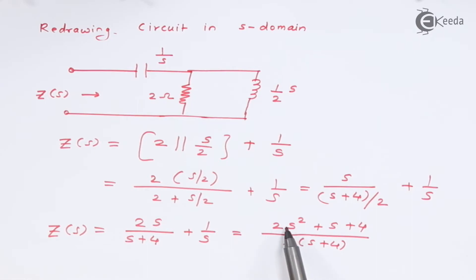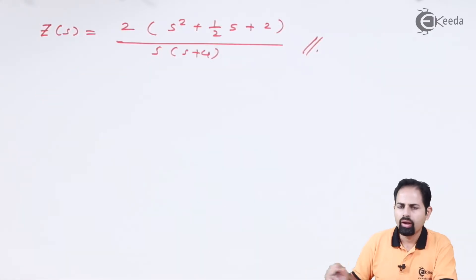We will take this two ohm common because we want to make coefficient of this S square, which is the highest order of numerator, as 1. So if you take this two common, we have got this impedance function finally.